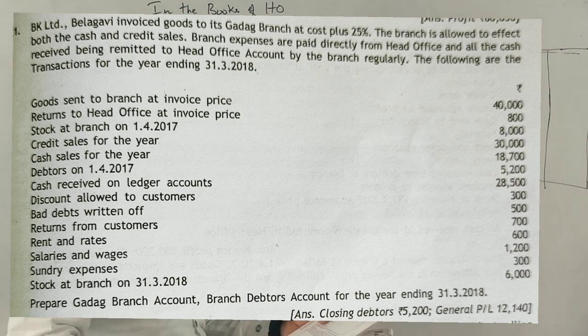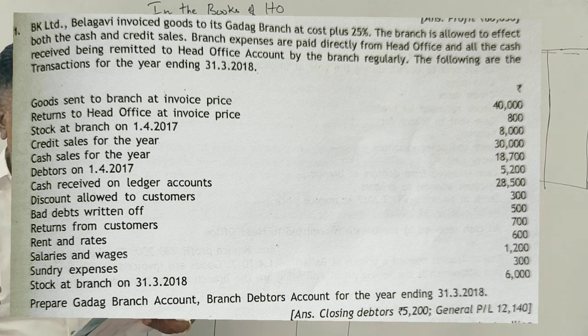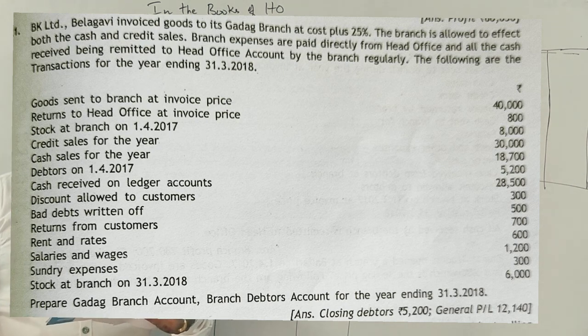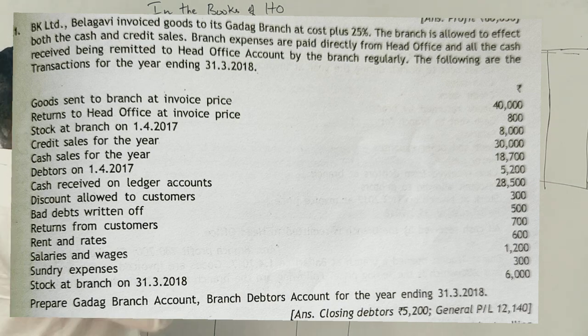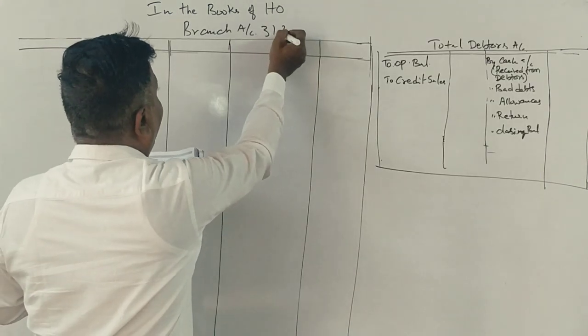Students have a question about branch accounting. BK Limited Belgaubi invoiced goods to its Gathak branch at cost plus 25%. The branch is allowed to effect both cash and credit sales. Branch expenses are paid directly by head office, and all cash received is remitted to head office. The following are the transactions on 31st March 2018.